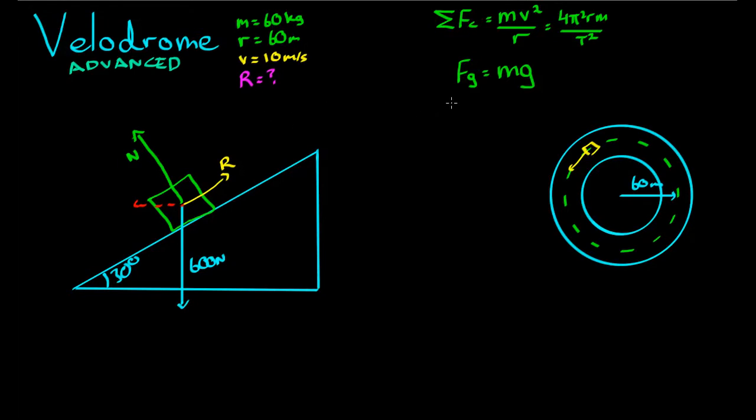The net force equals M times V squared, 10 squared over 60. That is 60 divided by 60 cancels down to 100 newtons. So the net force acting towards the middle of that circle is 100 newtons. Gravity has no component acting in the horizontal direction. The normal force does, and the resistive force does. So these two forces act in the horizontal direction.